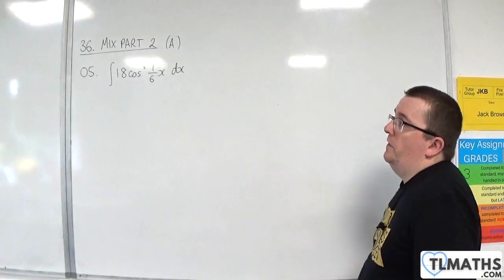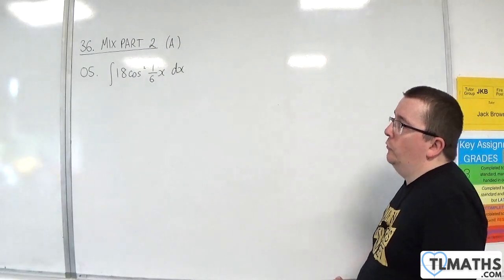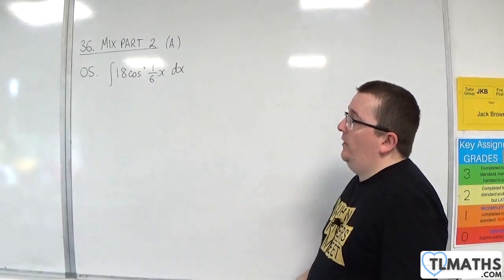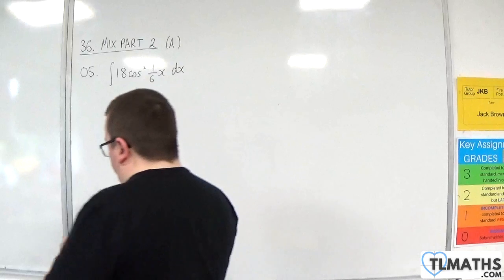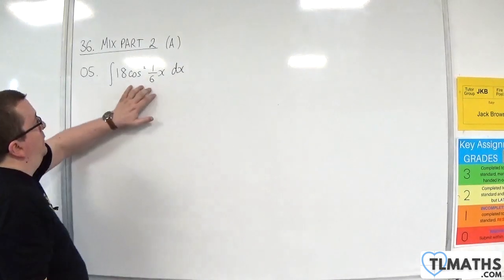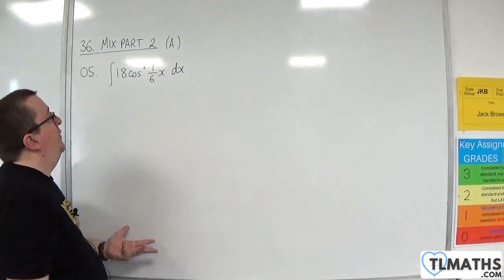This is number 5. We've got the integral of 18 cosine squared of one-sixth x. The thing with cosine squared is that we're going to have to use a double angle formula for that.